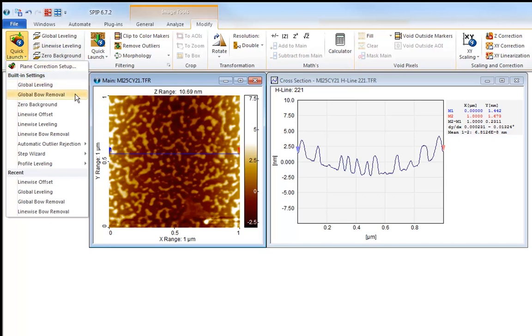Remaining distortions, such as tilt or bow, can usually be removed using global plane correction, either before or after the linewise offsetting.